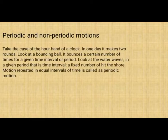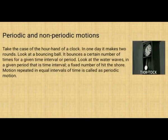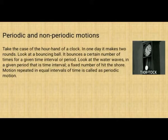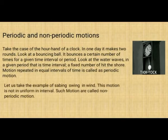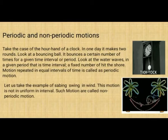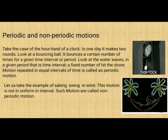What is periodic and non-periodic motion? Take the case of the hands of a clock — in one day it makes two rounds. A punching ball hits a certain number of times for a given time interval. Water waves show a fixed number of crests in a given period. Motion repeated in equal intervals of time is called periodic motion. On the other hand, a swaying swing in the wind is not uniform in its interval — such motions are called non-periodic motion.